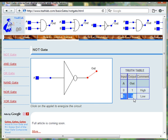When the input is 0, then the output of the NOT gate is 1. When the input is 1, then the output of the NOT gate is 0.